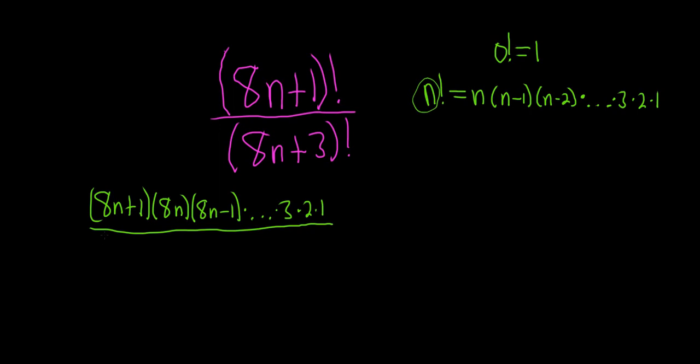And then on the bottom we have 8n plus 3. And then you subtract 1, right? You always start with this and then you just start subtracting. So subtracting 1, you would get 8n plus 2. Then you get 8n plus 1. And then oh, look, it matches. The next one is 8n. Oh, look, it matches. 8n minus 1. So you see how it matches what we have above.